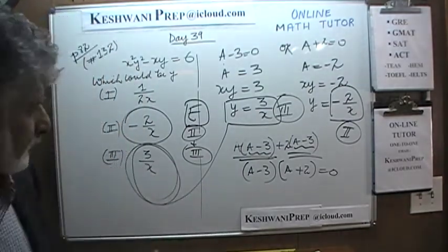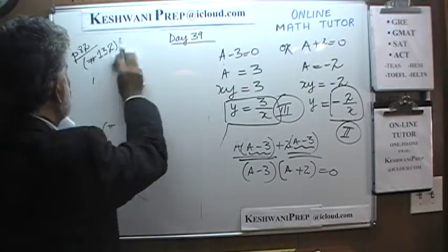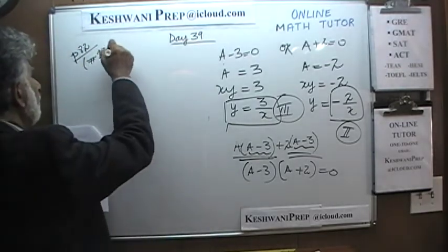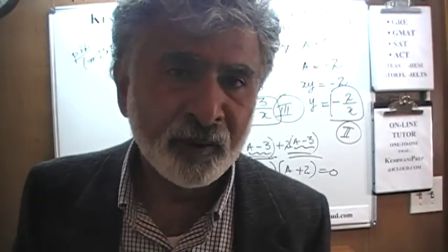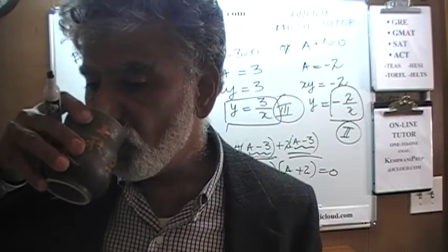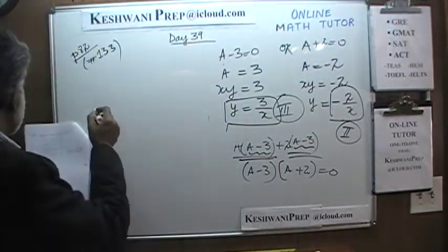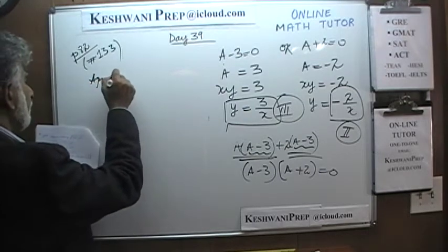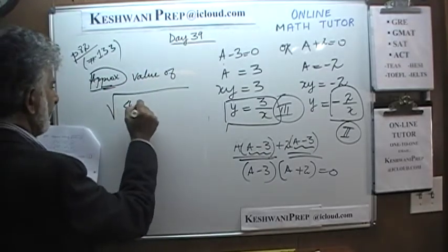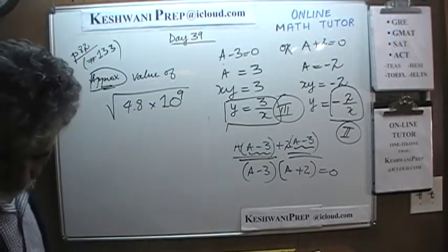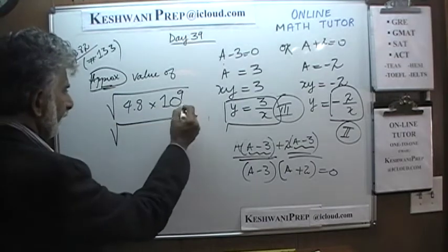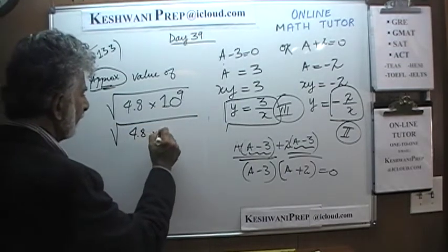Don't you sometimes wish data sufficiency problems would go so nicely and smoothly? Data sufficiency problems can be very nasty. Number 133 asks for the approximate value of the square root of 4.8 times 10 to the 9th. Let's write this as 4.8 times 10 cubed times 10 to the 6th — because 10 to the 6th is a million and the square root of a million is a thousand.